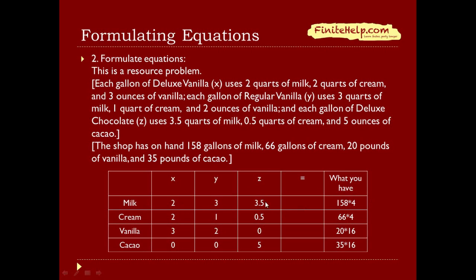You have 158 gallons of milk on the right, but on the left you have two quarts, three quarts, and 3.5 quarts. You can convert the quarts to gallons, but it's easier to convert the gallons to quarts by multiplying by four. Similarly, do the same for cream, which is also in quarts on the left and gallons on the right. For vanilla and cocoa, the left side is in ounces and the right is in pounds, so take 20 times 16 and 35 times 16, since one pound has 16 ounces. On the test, unit conversions should be provided — they are not testing whether you know how to convert units.